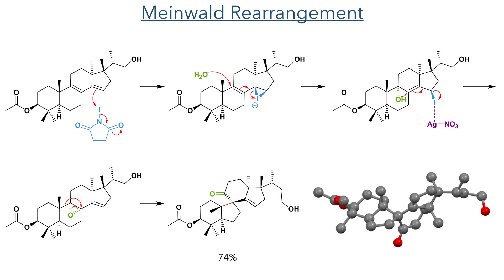This alkene reacts in the next step with N-iodosuccinimide, forming an iodonium species. The 1,4-conjugate addition of water then occurs, opening the iodonium to form an iodide. This iodide coordinates to silver nitrate present in the reaction mixture, making it a good leaving group and promoting the migration of a double bond, together with the attack of the hydroxyl group, to form an epoxide. This epoxide allows for a Meinwald rearrangement, where a carbon-carbon bond migrates together with the opening of the epoxide, forming the ketone and the spirocyclic ring junction in a 74% yield.